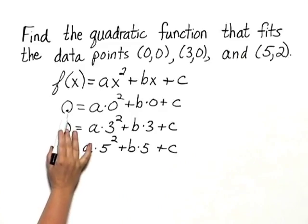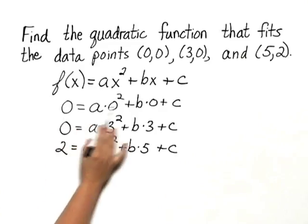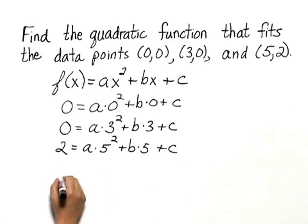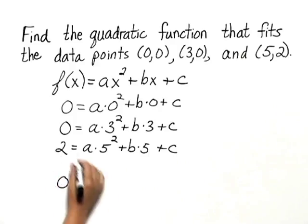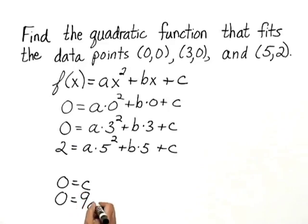Simplifying this, this simply tells us that 0 equals c. This tells us that 0 equals 9a, that's 3 squared a, plus 3b plus c.